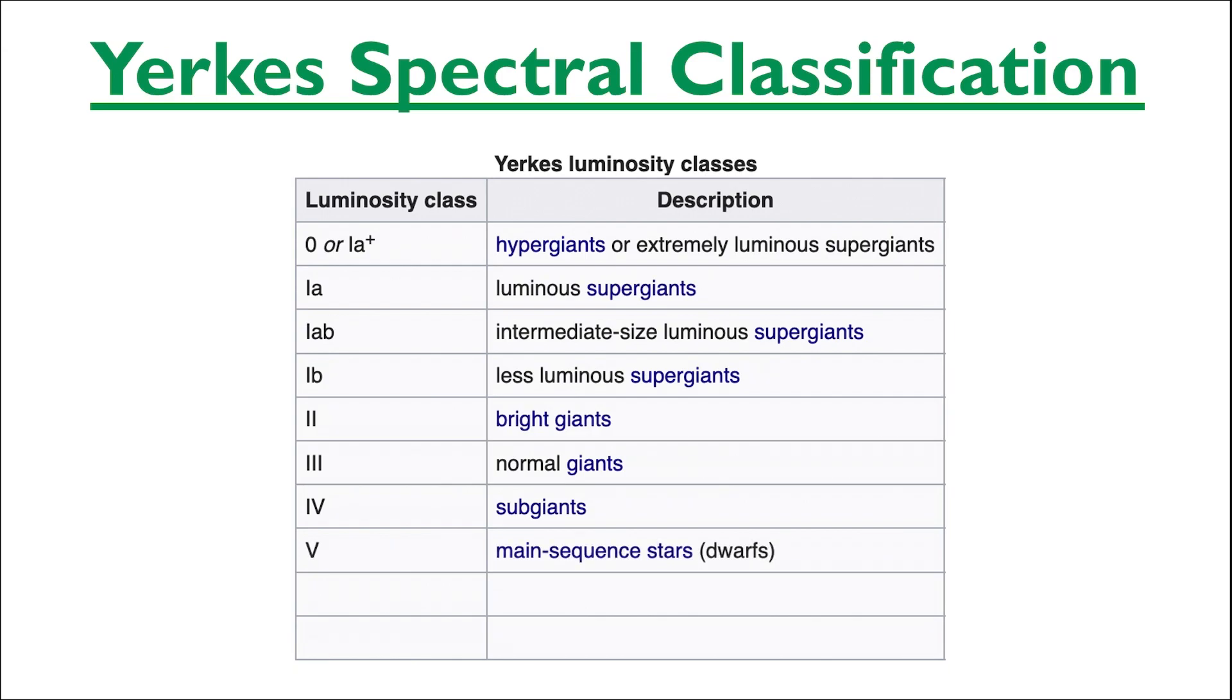and class 5, the main sequence stars, some of which could also be referred to as dwarf stars, particularly those on the right half of the main sequence. The next luminosity class 6 refers to the subdwarfs, which are stars that are slightly smaller than the main sequence stars, but not as small as the white dwarfs, which have a luminosity class of 7.